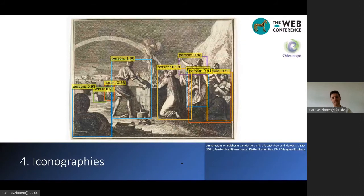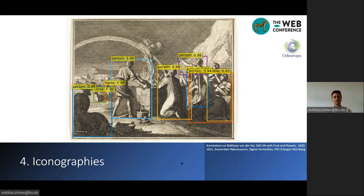Another way of representing smells visually that we found is by depicting iconographies. Art historians found some iconographies that have a strong connection to smell, meaning that in the texts connected to these iconographies, smell plays a strong role. So finding images which depict these iconographies might also provide meaningful insights into the way smell was represented visually.